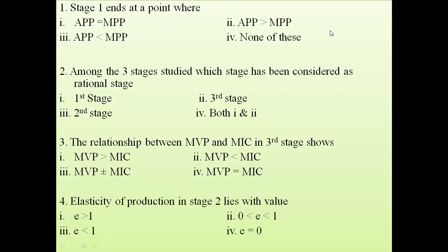The first question: Stage one ends at a point where — the options are APP equals MPP, APP greater than MPP, or APP less than MPP. The answer is APP equals MPP, and that is the point where APP is maximum.